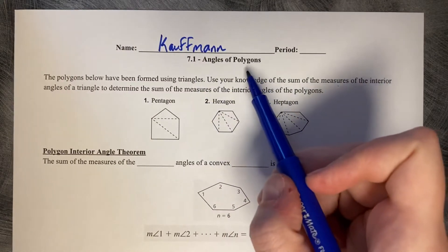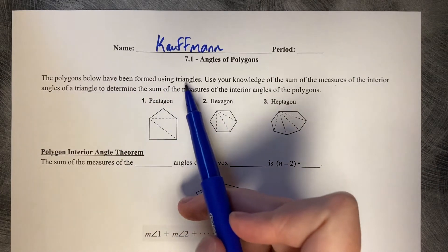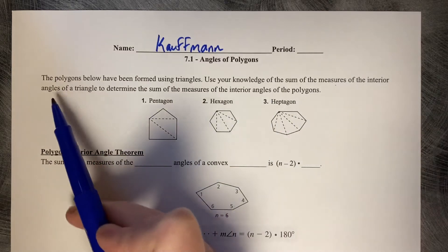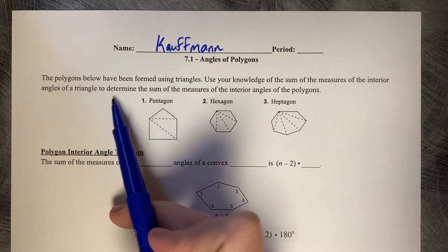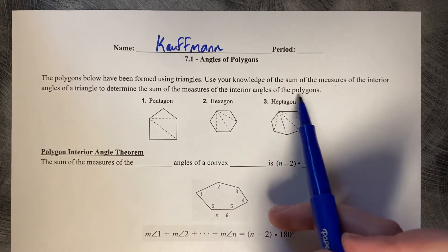7.1 Angles of Polygons. The polygons below have been formed using triangles. Use your knowledge of the sum of the measures of the interior angles of a triangle to determine the sum of the measures of the interior angles of polygons.